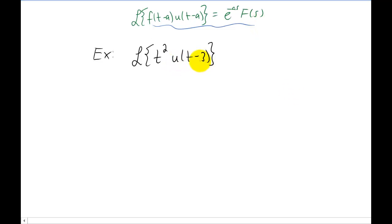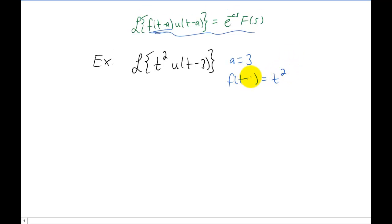We can't do anything to change this step function right here. So we're pretty much stuck with an a value of 3. And if we're going to match up the Laplace transform we're trying to find with what we have in our table. Then I guess this F of t minus a must be equal to t squared. Of course in this case our a value we already know is 3.